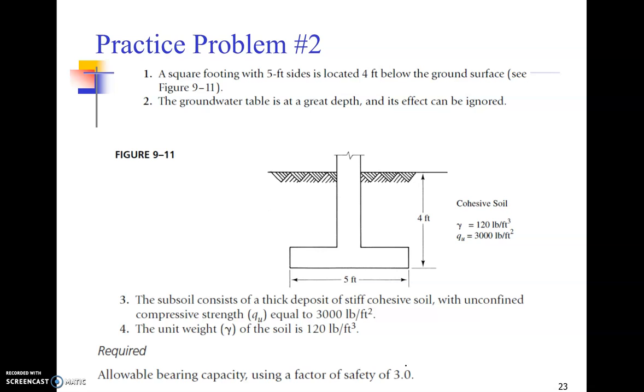Here's the second problem. A square footing with five feet sides is located at four feet below the ground surface. The groundwater table is at a great depth and its effect can be ignored. When it is at greater depth, its effect definitely can be ignored. The third point is the subsoil consists of a thick deposit of stiff cohesive soil with the unconfined compression strength qu equal to three kilopounds per square feet, three thousand pounds per square feet. So the c dash value we all know is qu by 2, going to be 1.5 kilopounds per square feet.